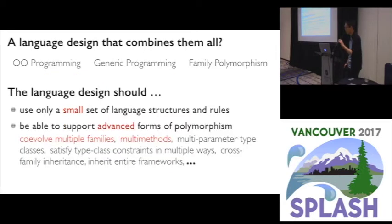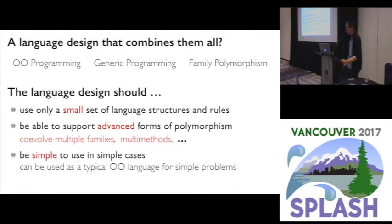We also want to support advanced forms of these different kinds of polymorphism. For example, a family polymorphism mechanism typically does not support evolving multiple families at the same time, and a type class mechanism typically does not support multi-methods for binary operations. And finally, our language should stay simple in simple cases — the less advanced part of this language ought to be used as a typical language like Java when no advanced forms of polymorphism are required.